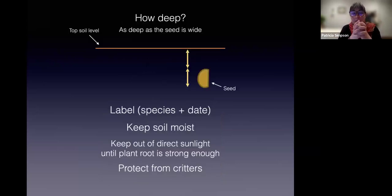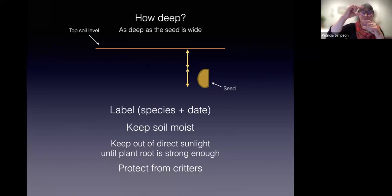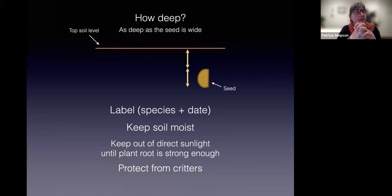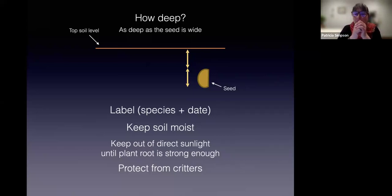For how deep to put seeds, the good rule of thumb is to sink a seed as deep as it is wide. If you have a five millimeter seed, you want to sink it about five millimeters from the top of your soil, with about five millimeters of topsoil on top. Seeds that are very small — like Dudleya or monkey flower — are so tiny that you just sprinkle them and don't even need to cover them. They will start sprouting just like that. You can put a very thin layer of sand on them as well, but don't cover them with any thick layer of soil.